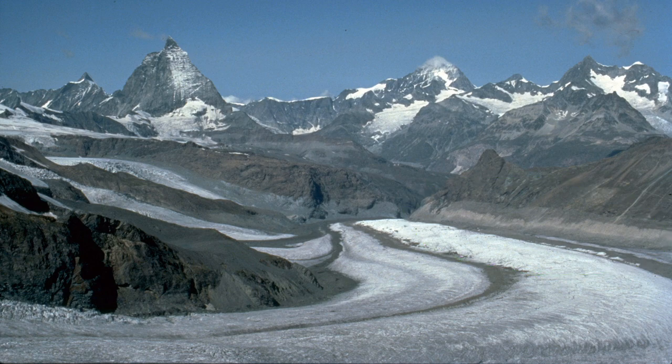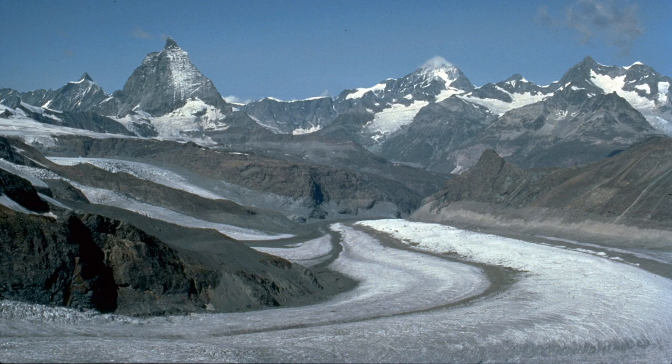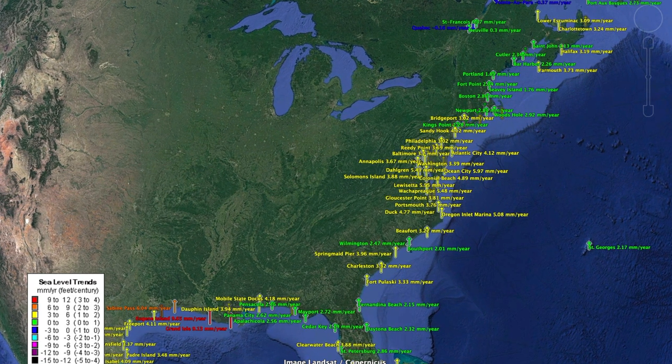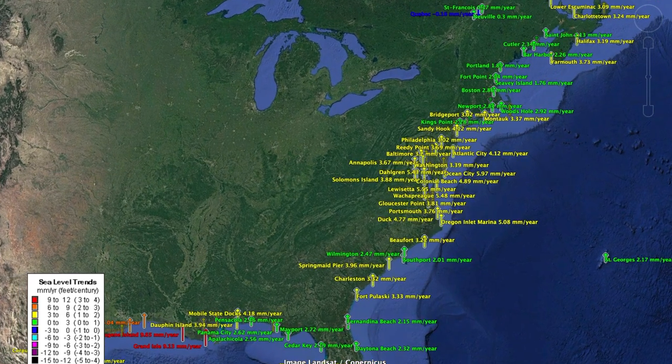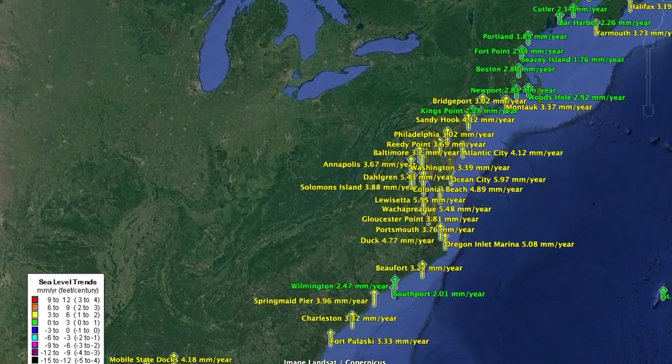We can also look at records of sea level over the last hundred years. There are tide gauges that monitor sea level all over the world. These are the current measurements on the east coast of North America. Note that they're all going up.